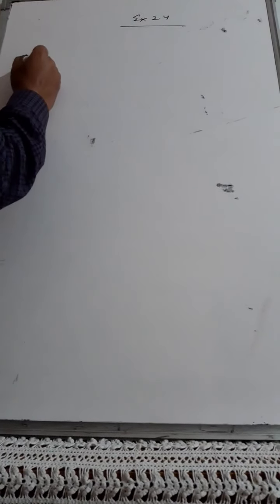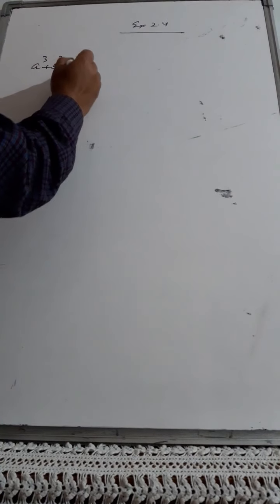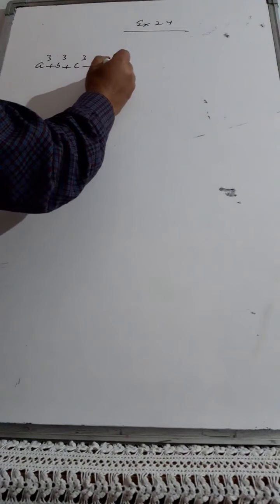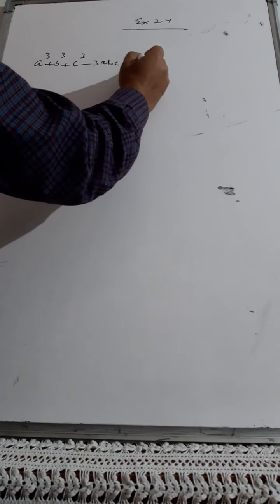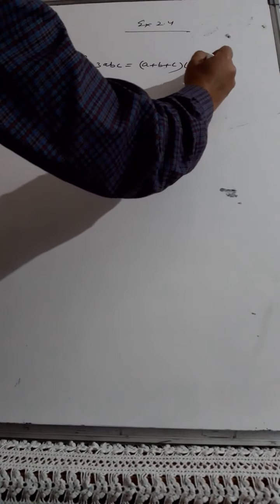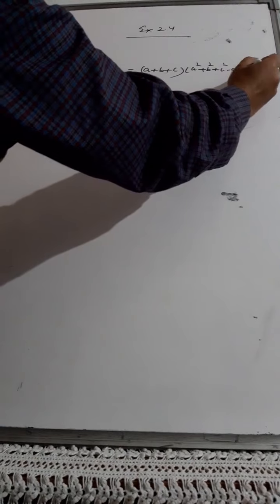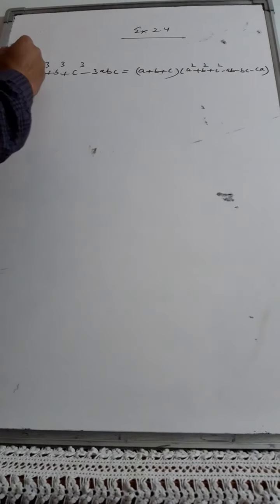Welcome back. Let us continue with Exercise 2.4. The new identity we have to share today is: a³ + b³ + c³ - 3abc is equal to (a + b + c)(a² + b² + c² - ab - bc - ca). This is the new identity.